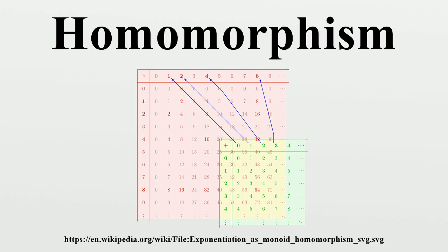Basic examples. The real numbers are a ring, having both addition and multiplication. The set of all 2×2 matrices is also a ring under matrix addition and matrix multiplication. If we define a function between these rings where r is a real number, then f is a homomorphism of rings, since f preserves both addition and multiplication. For another example, the non-zero complex numbers form a group under multiplication, as do the non-zero real numbers. Define f from the non-zero complex numbers to the non-zero real numbers by f(z) = |z|, that is, f is the absolute value of the complex number z. Then f is a homomorphism of groups since it preserves multiplication: f(z₁·z₂) = |z₁·z₂| = |z₁|·|z₂| = f(z₁)·f(z₂). Note that f cannot be extended to a homomorphism of rings, since it does not preserve addition.